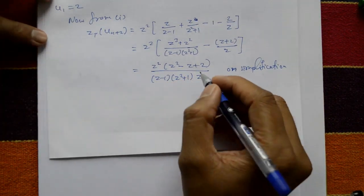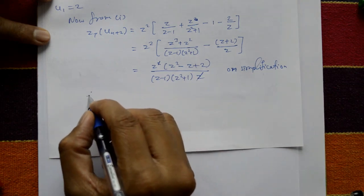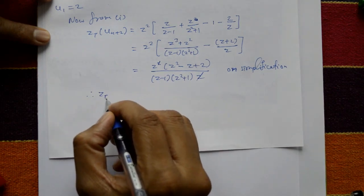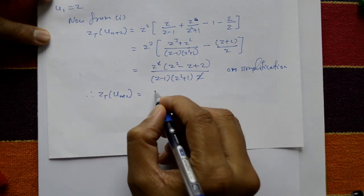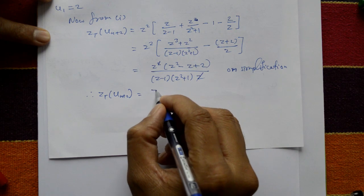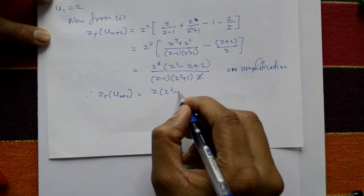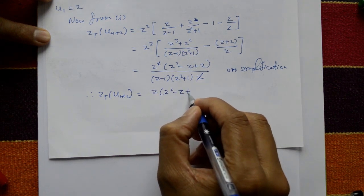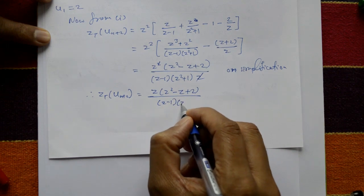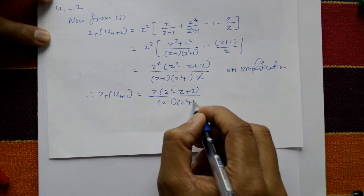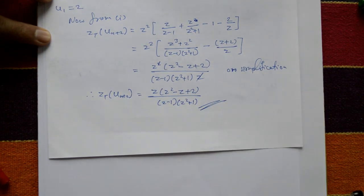After cancellation, z cancels from numerator and denominator. Therefore, the Z-transform of u(n+2) is equal to z · (z² - z + 2) / [(z-1)(z²+1)]. This is the required solution.